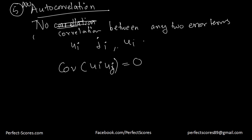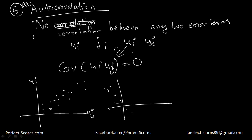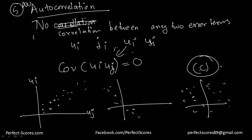Basically, the error terms are spread independently — they are not correlated at all. If I represent two error terms, u of i and u of j, on a graph, one pattern represents positive correlation, another represents negative correlation, and what we assume here is no correlation. This is something we'll be discussing in detail later on.